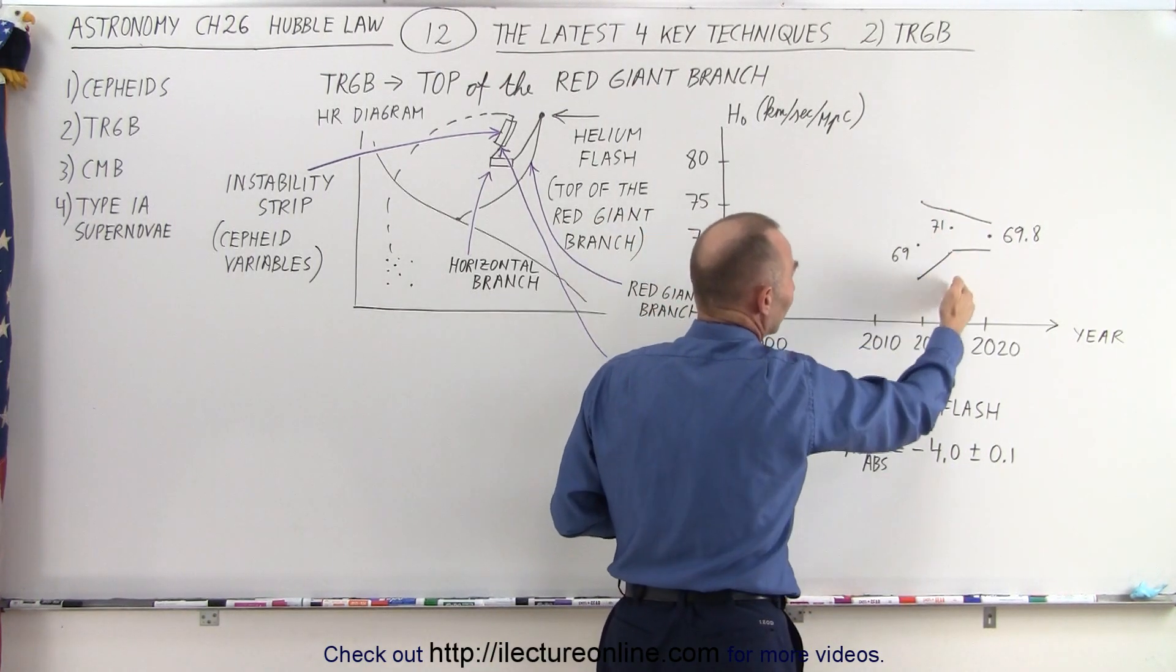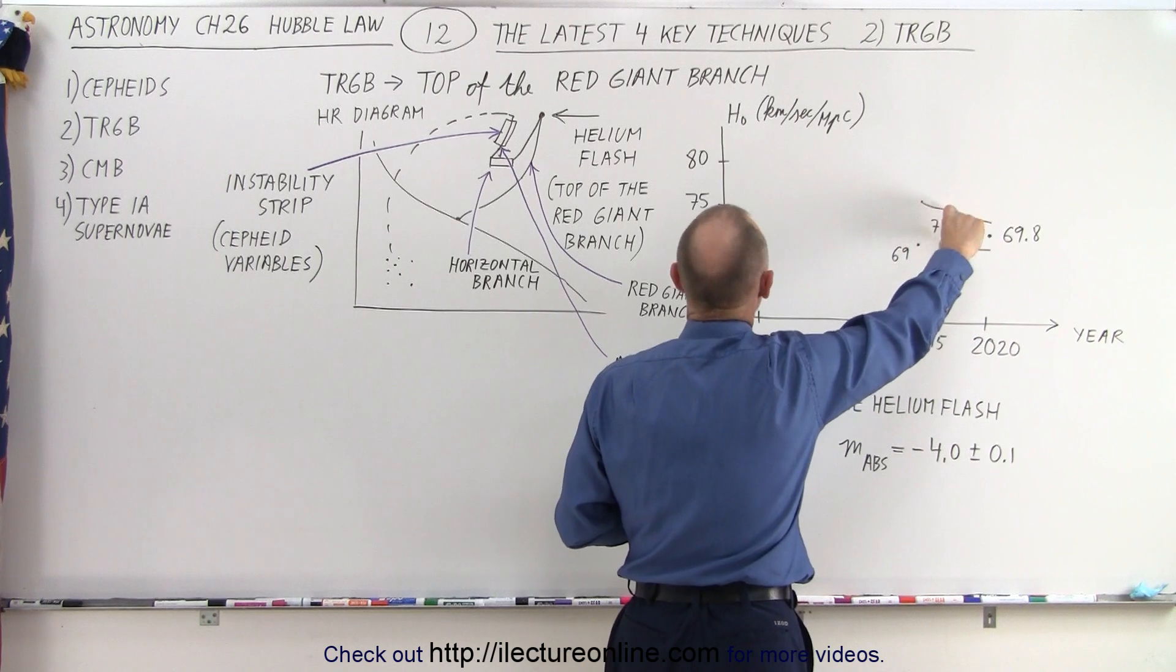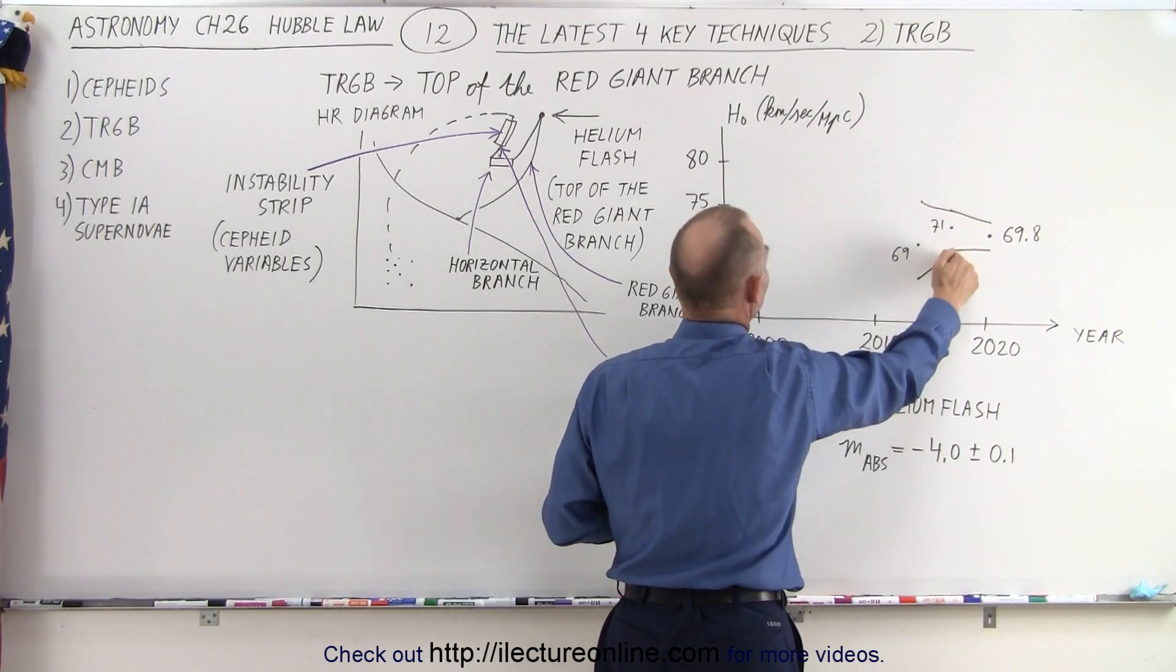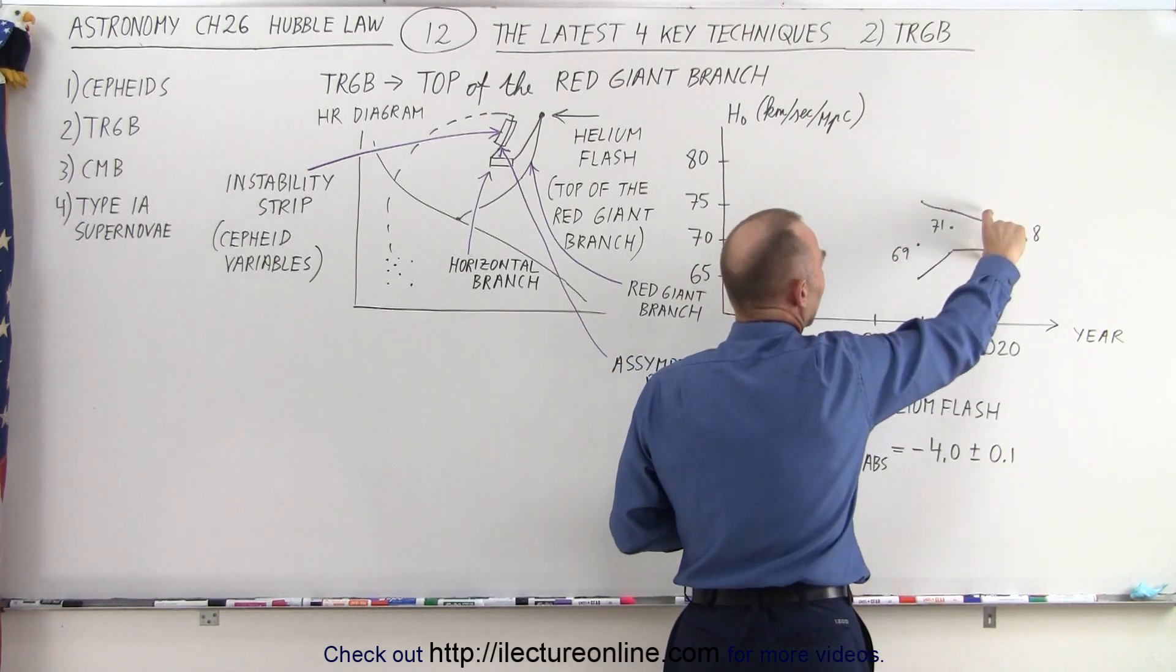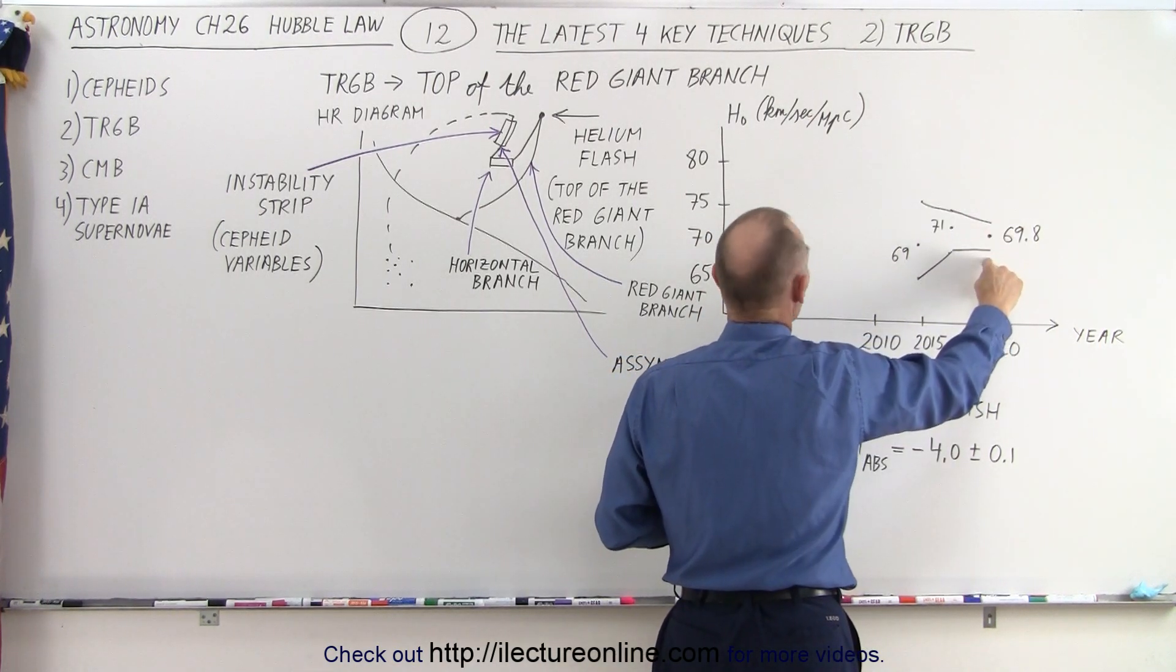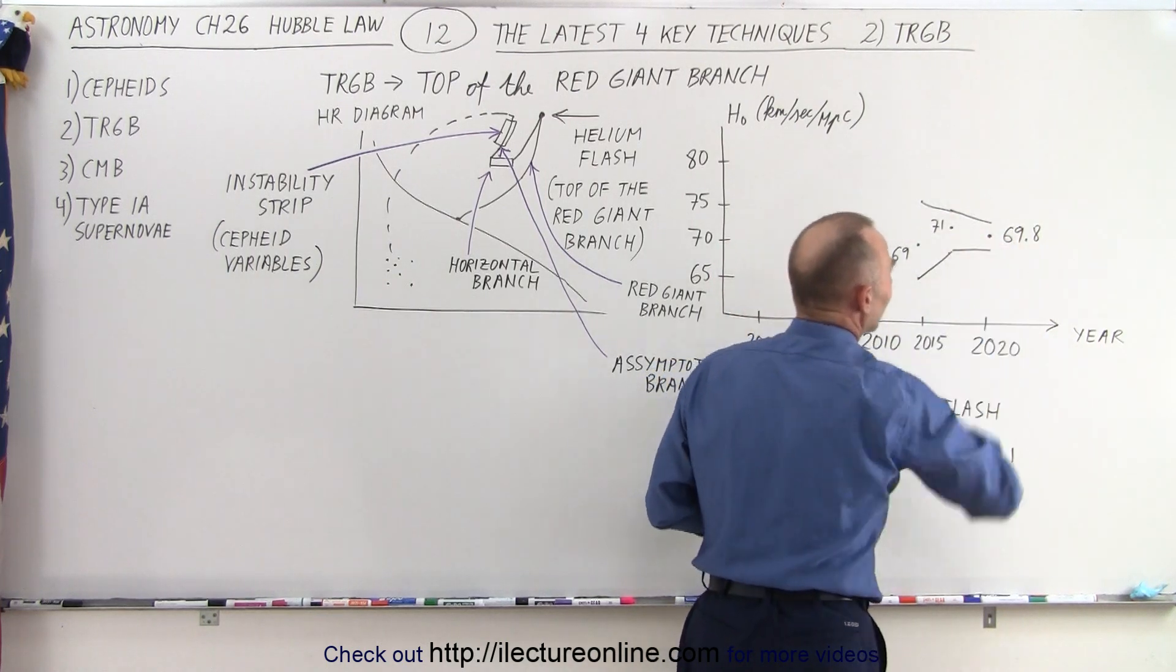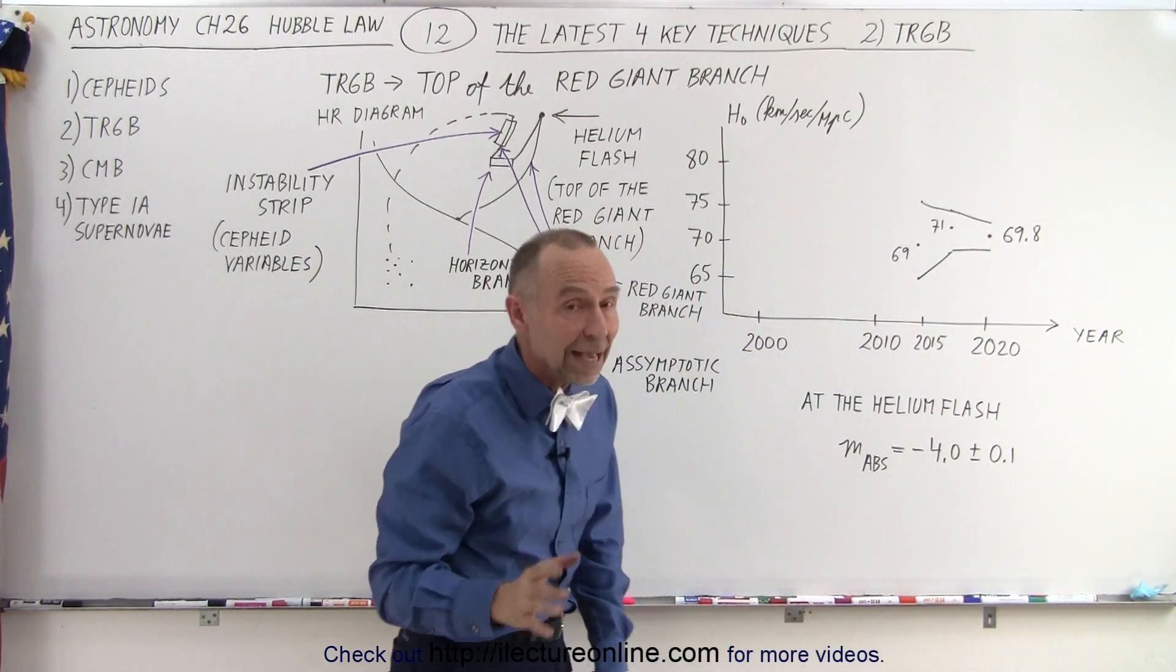Very quickly, by the time 2017 came around, the range had changed from about 74 to about 69, with an average value of 71. And then finally, about 2020, we're now at a range of about 72 on the high end, and maybe 69 on the low end, with an estimated value of about 69.8.